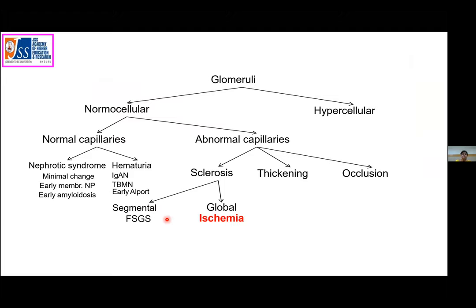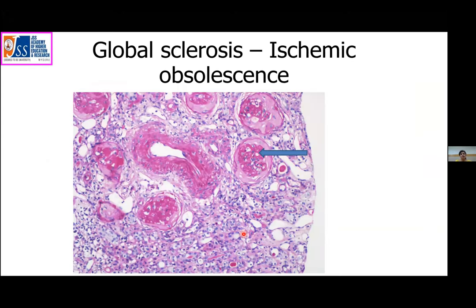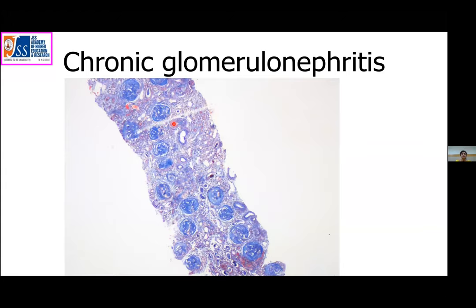Global sclerosis can be due to ischemia or chronic glomerulonephritis. In ischemic obsolescence, there is wrinkling of the glomerular basement membrane and the Bowman space is filled with collagen, which is very characteristic. In chronic glomerulonephritis, you see solidified masses of sclerotic glomeruli — this is the end stage of glomerulonephritis.